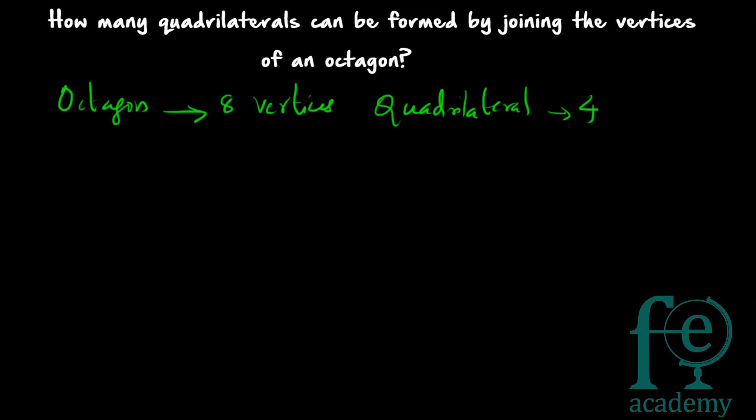The quadrilateral A, B, C, D will be the same as the quadrilateral D, C, B, A. Both are representing the same quadrilateral. So here also the order does not matter, and it will be a case of combination. That is the first thing you have to check — whether the order matters or does not matter. If the order does not matter, it is a case of combination.